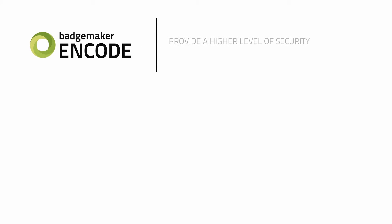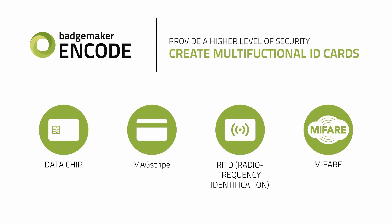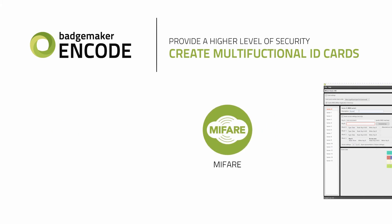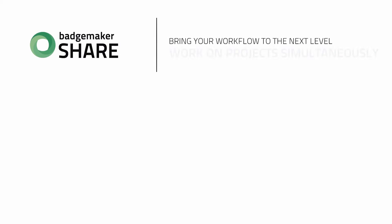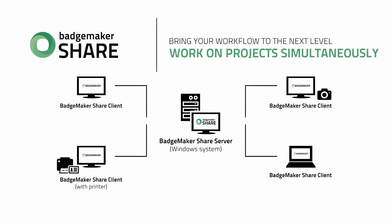The add-on Encode provides the functionality to use data from a Badgemaker project and encode it to a smart card. Badgemaker considers all types of encoding and the added data when creating an encoded card, starting with the design of a card. The add-on Share permits users to share Badgemaker projects on multiple workstations and work simultaneously at different locations on the same project.